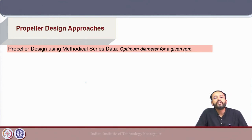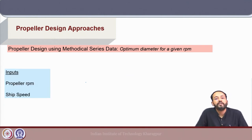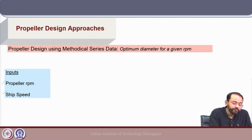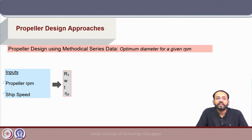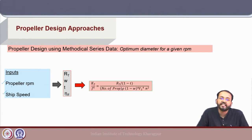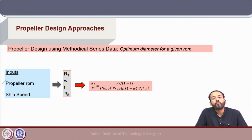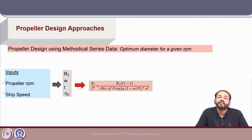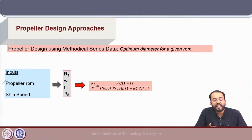In the second approach, we look into the design problem in the opposite way: for a given propeller RPM, we use the same design charts to obtain the optimum propeller diameter. So propeller RPM and ship speed are the inputs. Again we have total resistance, wake fraction, thrust deduction, and relative rotative efficiency as initial estimates. A problem involving this concept was discussed earlier in the course using Kt/J⁴ to calculate propeller diameter.